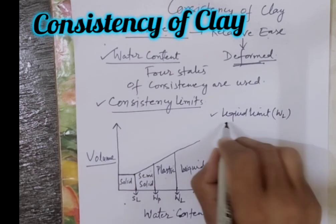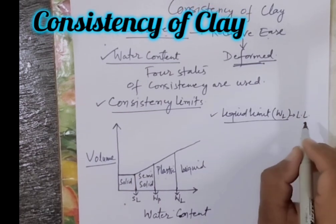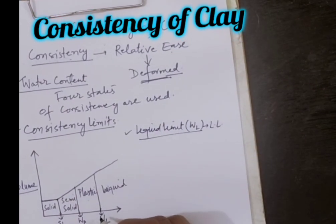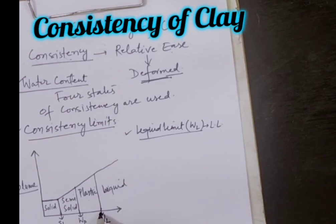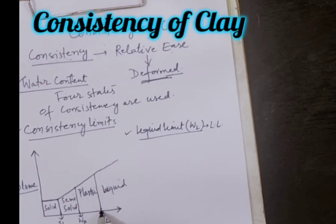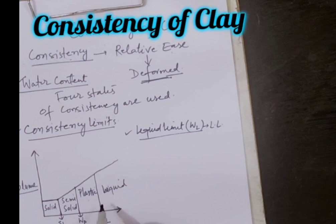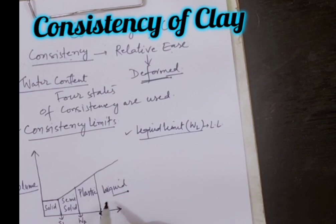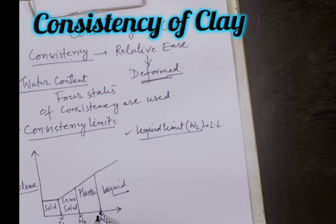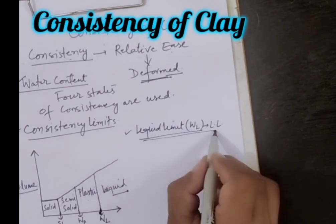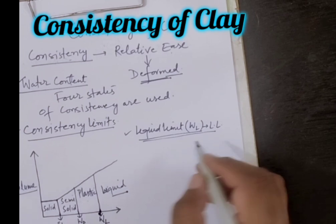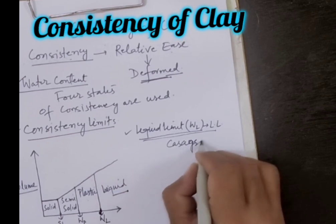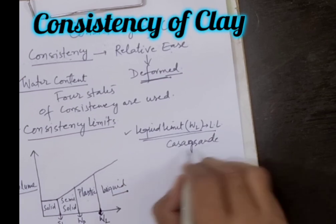This boundary condition is called liquid limit. Liquid to plastic is called liquid limit, plastic to solid is called plastic limit, and semi-solid to solid is called shrinkage limit. Let us understand what is the meaning of liquid limit. WL is called liquid limit. Liquid limit is the water content at which a soil is particularly in liquid state but has infinitesimal resistance against flow, which can be measured by any standard procedure.